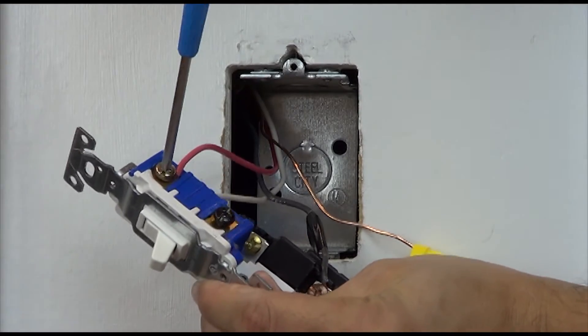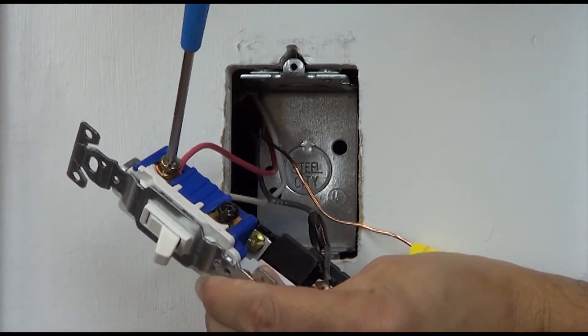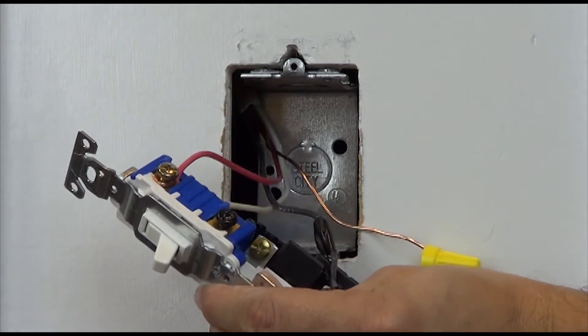Remove the two traveler wires from the switch and connect them to the two same colored screws on the dimmer.